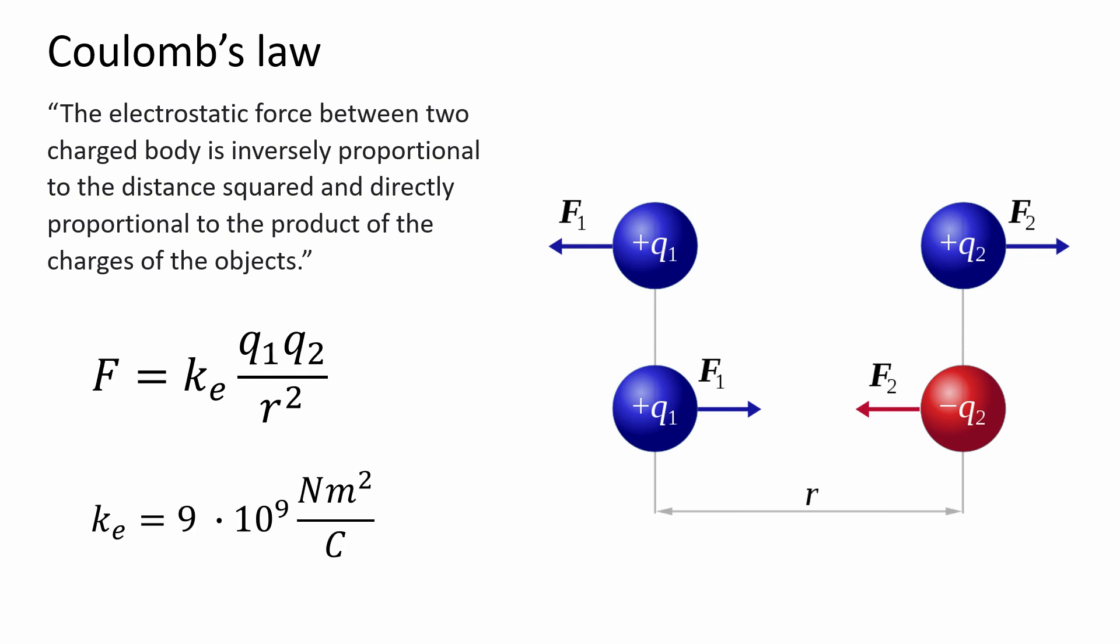Ke is Coulomb's constant, with a value of 9 times 10 to the 9 Newton meters squared over Coulomb. Meanwhile, q1 and q2 are the magnitude of the charges, and r is the distance between them.